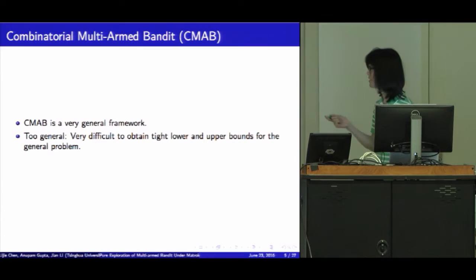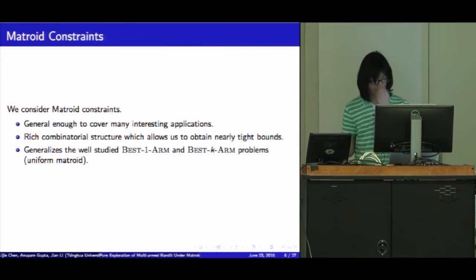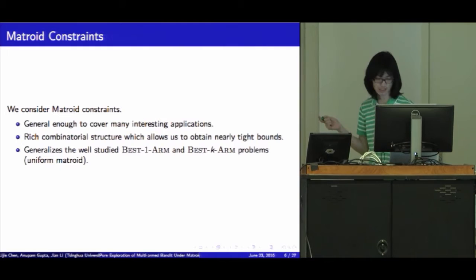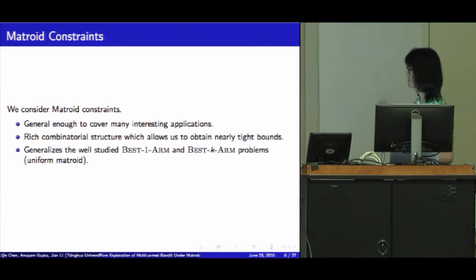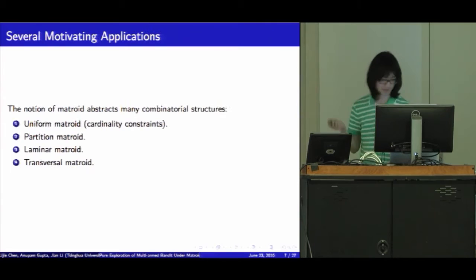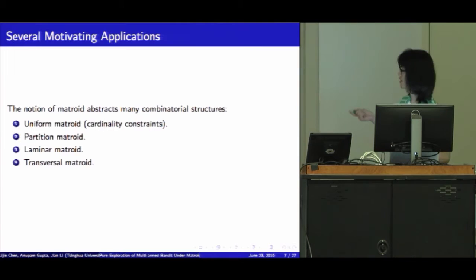There may be a very general framework, but the problem is also too general. It's very difficult to obtain tight lower bounds and upper bounds for that problem. So we consider matroid constraints. There are three good points for that. The first one is that it's general enough to cover many interesting applications. The second one is it also has a good structure for allowing us to design good algorithms which can match the lower bounds. Also, it generalizes the best one-arm and the best k-arm problems.